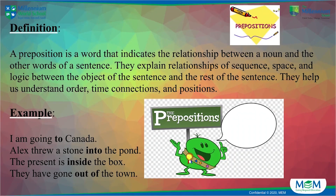Now that we have understood, after writing those five sentences, we have somewhat understood what a preposition is and what a preposition does. A preposition is a word that indicates the relationship between a noun and the other words of a sentence. They explain relationships of sequence, space and logic between the object of the sentence and the rest of the sentence. They help us understand order, time connections and positions.